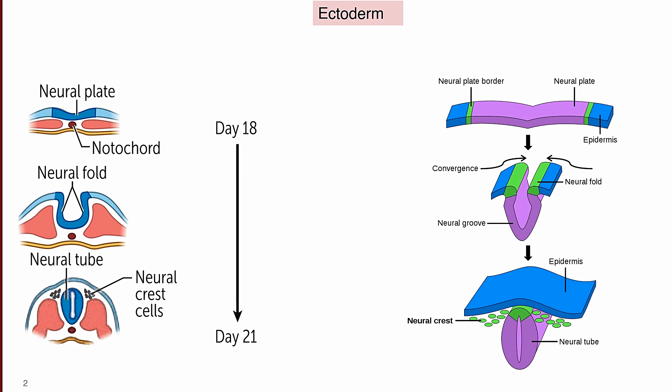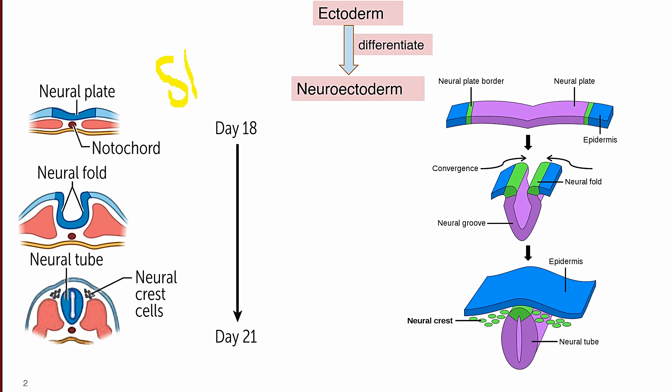Before starting our proper topic, we need to have a strong foundation on how the neural tube is actually being developed. So during the phase of gastrulation, when the three germ layers are established — the ectoderm, mesoderm, and endoderm — the notochord induces the differentiation of ectoderm into neural ectoderm. The first initiating event is that the ectoderm gets differentiated into neural ectoderm, under the action of a particular gene known as the sonic hedgehog gene.